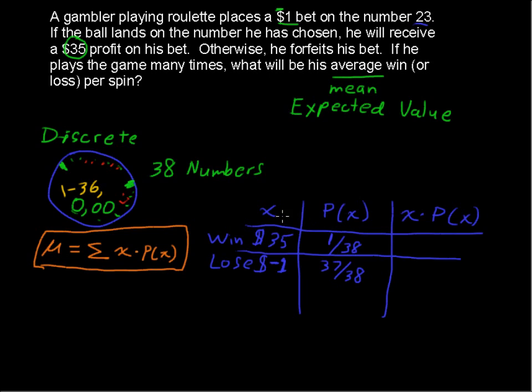We multiply x times P of x, because we're going to find this formula, and 35 times 1 over 38. So 35 over 38 is the product of those two, and negative 1 times 37 over 38 is negative 37 over 38. And then we want to sum those, as we see here. And the sum of those is negative 2 over 38.